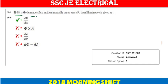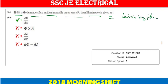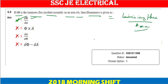Next question: dF is the luminous flux incident normally on an area dA. Illuminance is given by luminous flux divided by area. So the correct option is dF upon dA.